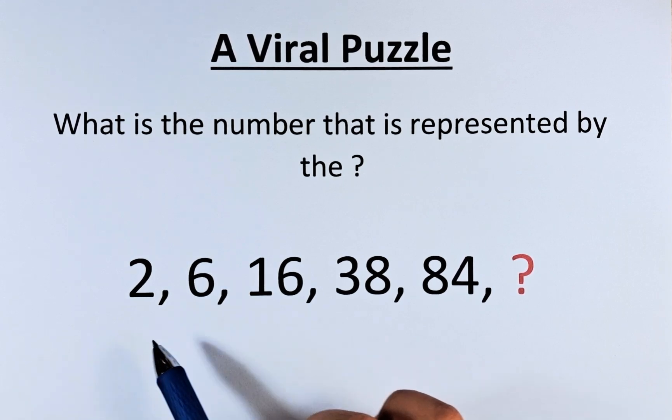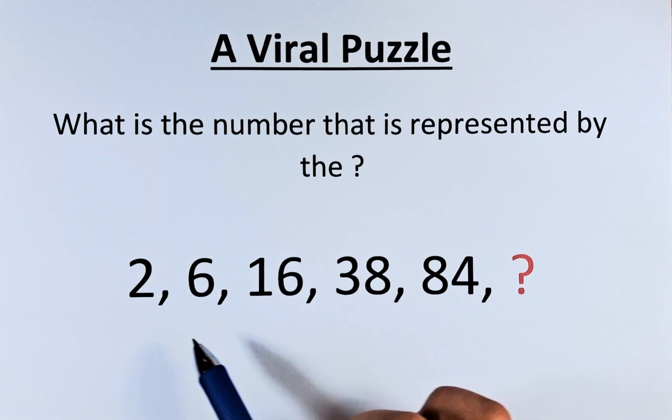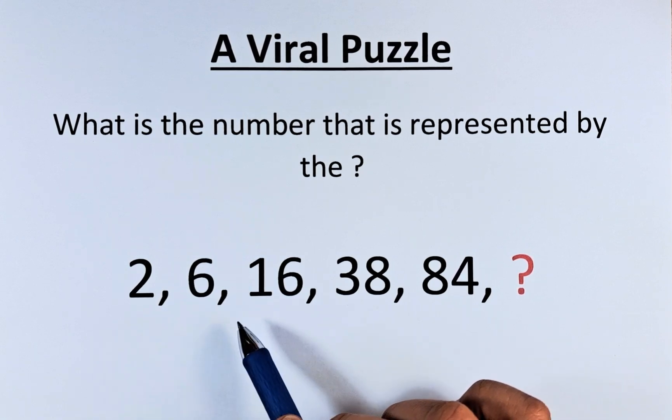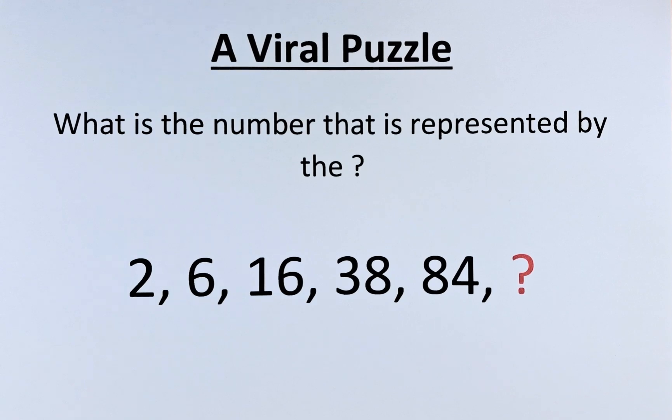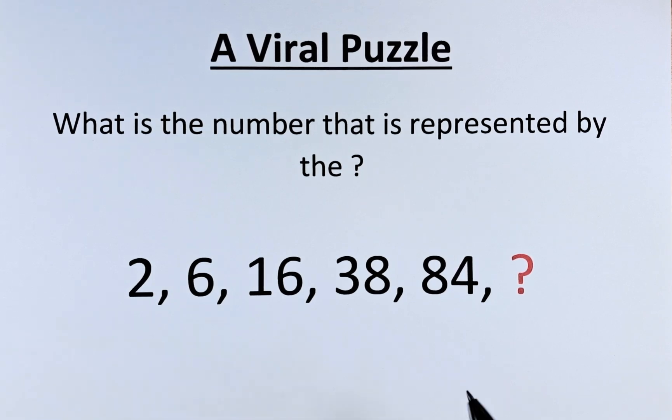From the start, 2 to 6, 6 to 16, they seem to be either a multiplication or an addition. The answer to this puzzle is that you need to have both. You need to add as well as multiply from one number to another.